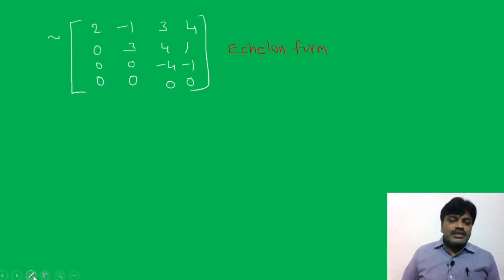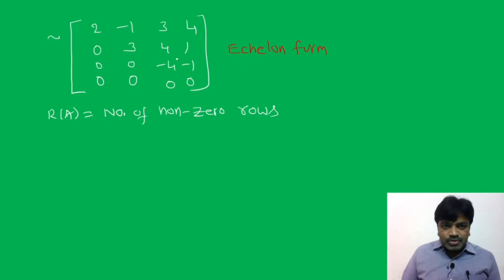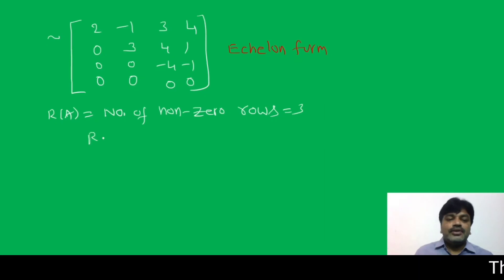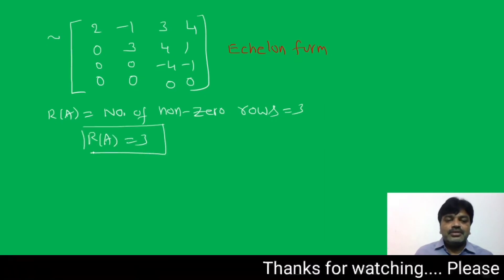Now, what is the rank of the matrix? Rank of A equals the number of non-zero rows. How many non-zero rows are there? 1, 2, 3. So, rank of A is equal to 3.